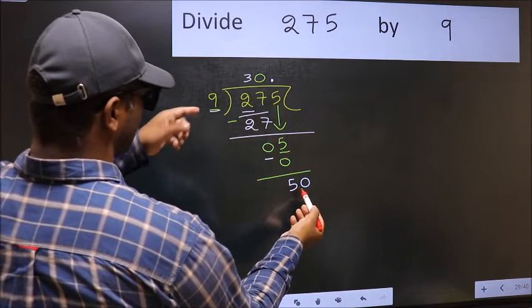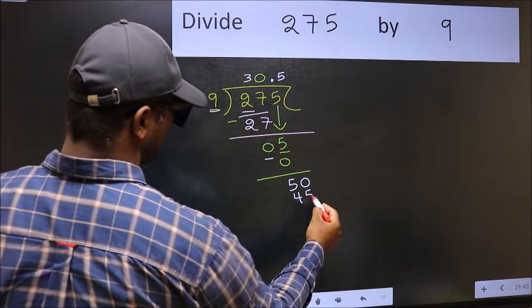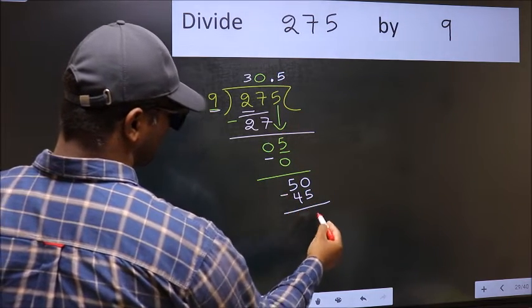A number close to 50 in 9 table is 9 times 5, 45. Now you should subtract. We get 5.